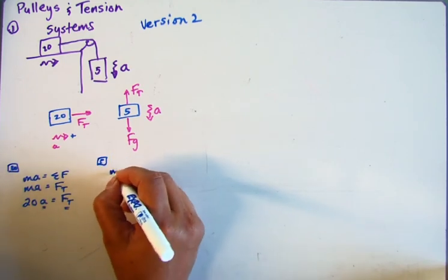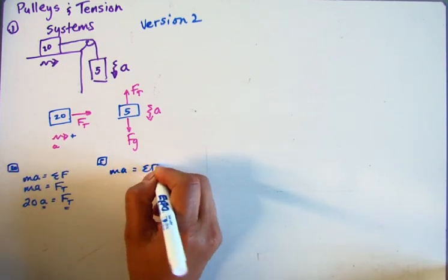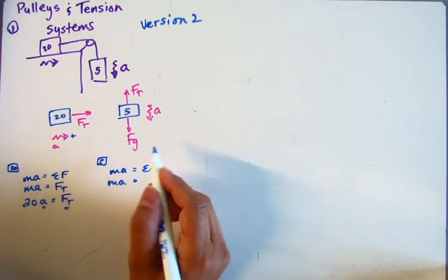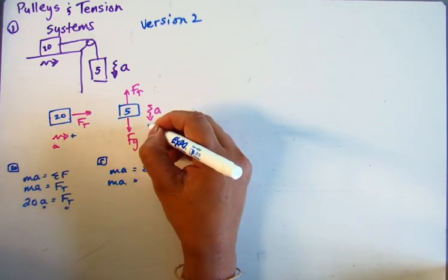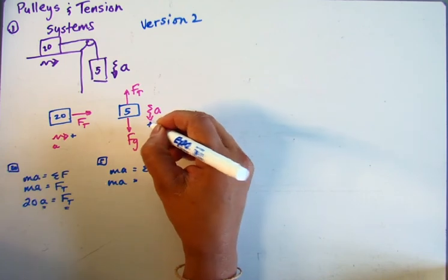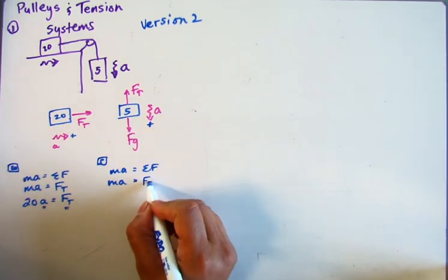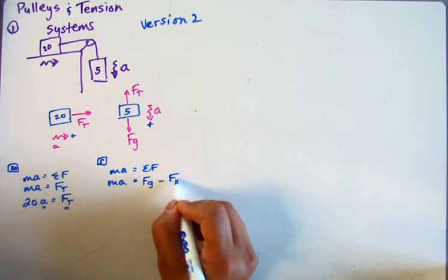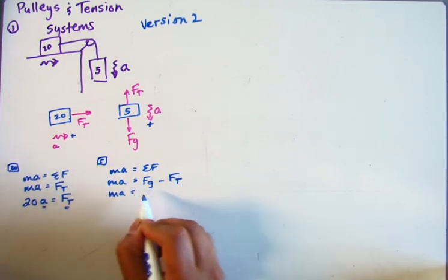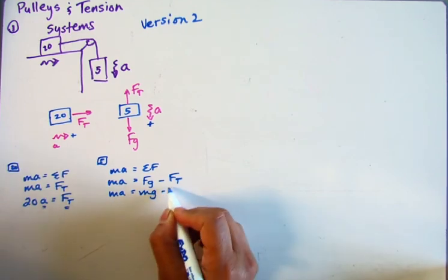And here we can go Ma equals the sum of the forces. Ma, and now the sum of the forces in this example, being really careful here, I'm going to again take the direction of acceleration to be positive. So I'm going to get Fg minus Ft.